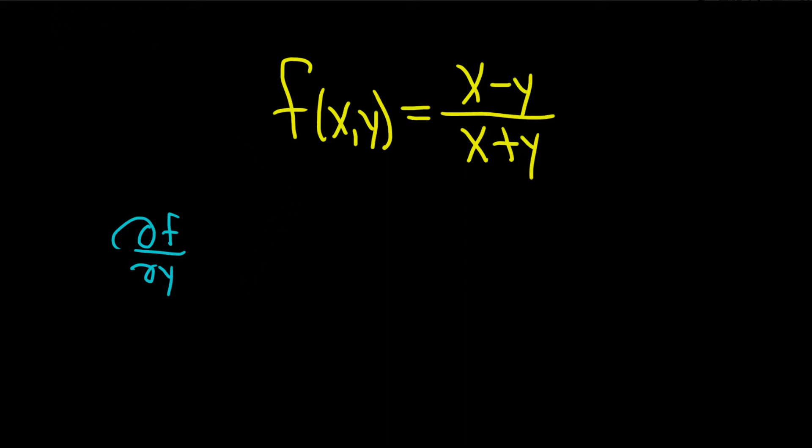The quotient rule says if you're taking the derivative of a quotient, so f over g prime, think of f as your top function and g as your bottom function. So it's the derivative of the top times the bottom minus the top times the derivative of the bottom, and it's all over the bottom one squared.